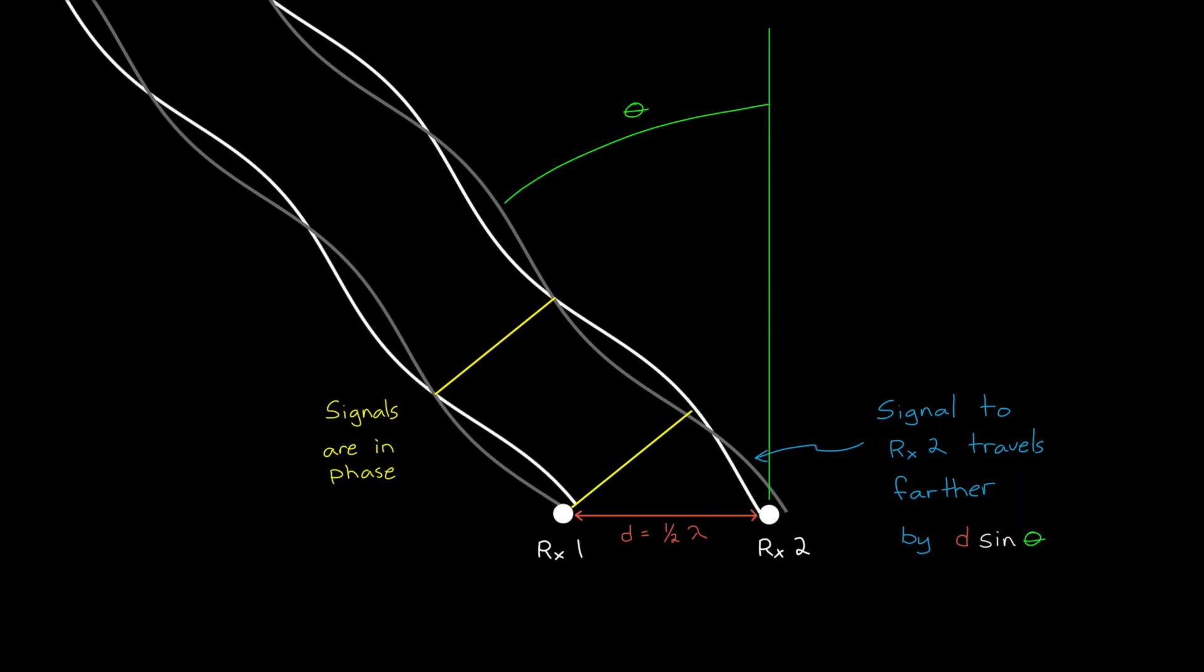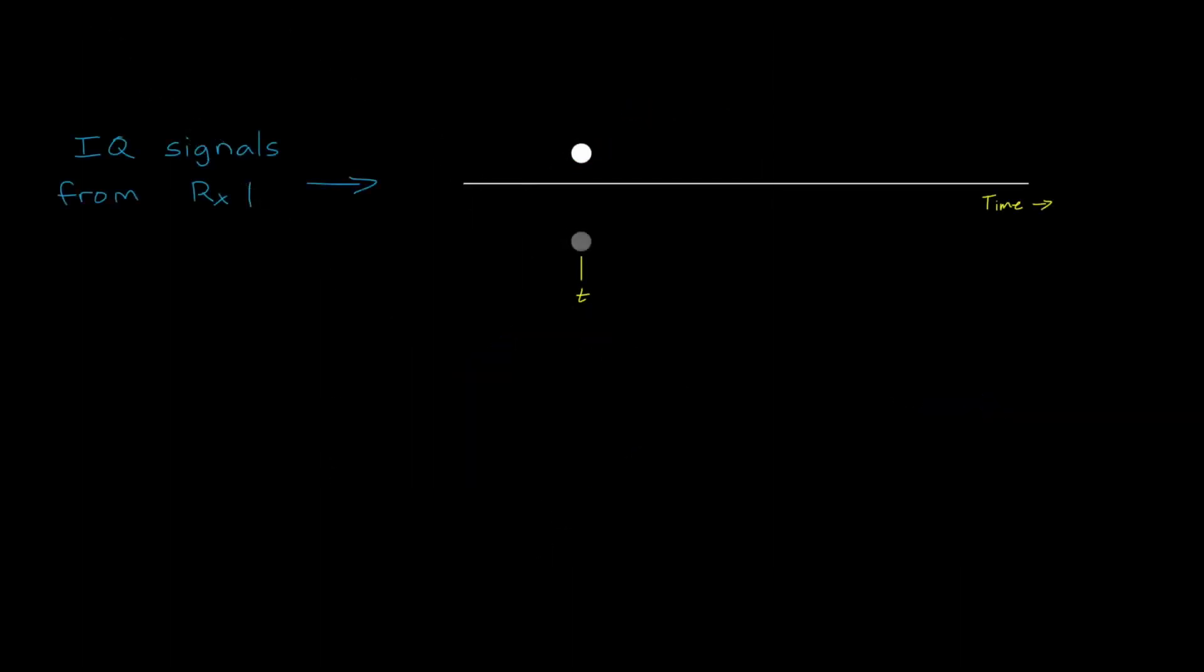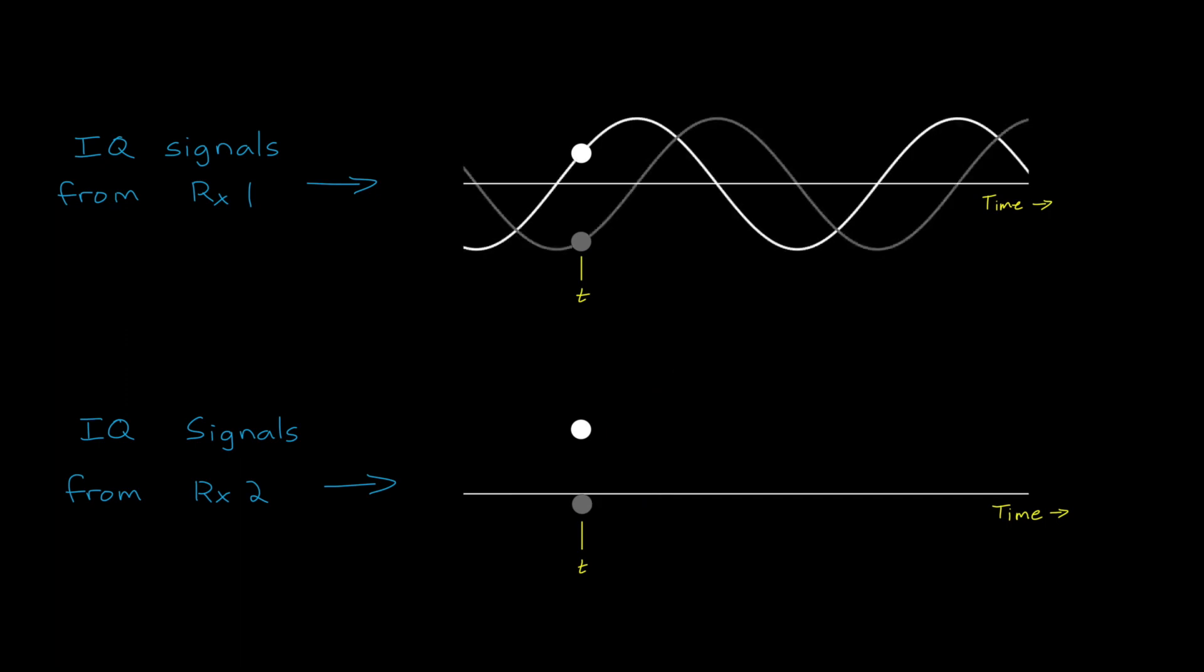And to illustrate that, let's start with an example that has no noise. Imagine the first antenna at time t measures these IQ values, and the second antenna measures these IQ values. Again, there's no noise or interference whatsoever in this system. These are perfect values. And so we could line up an ideal signal with the measured values from the first antenna. And then starting from that position, we could add phase until the IQ signal from the second antenna lines up. However far we shifted the signal is the phase difference between the two antennas, and assuming no noise in this system, then we could determine this phase shift really accurately.